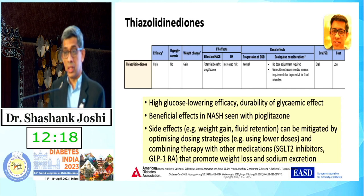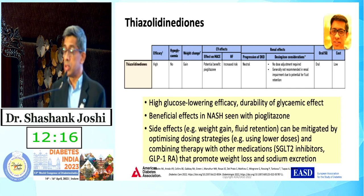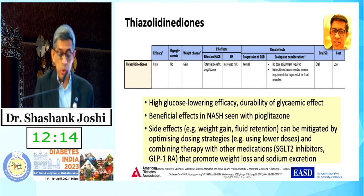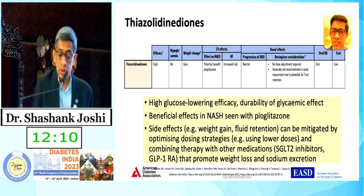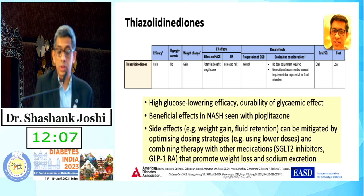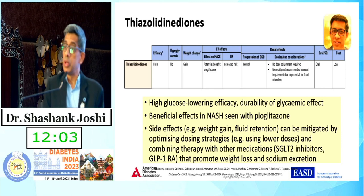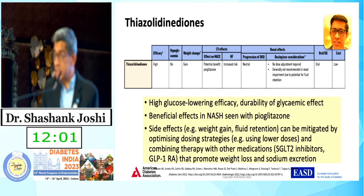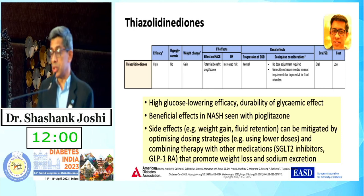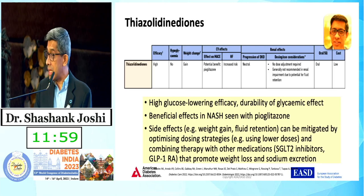Glitazones unmask latent cardiac failure; they have issues related to macular edema and fractures. But they are a very compelling drug for insulin resistance with some compelling data on NASH, and they show durability impact. We are an insulin-resistant population, so they are not out.